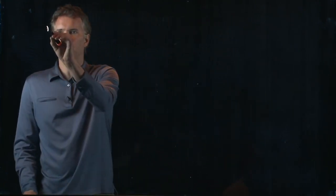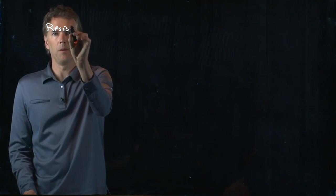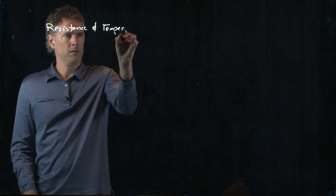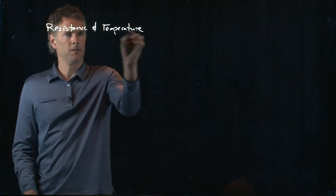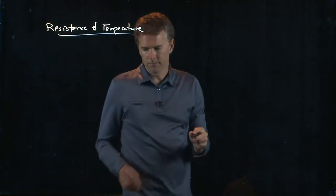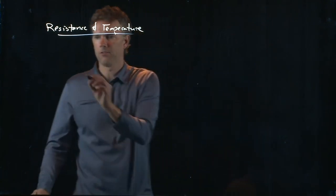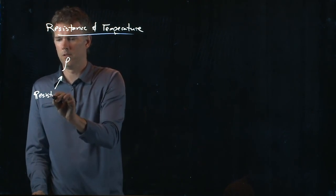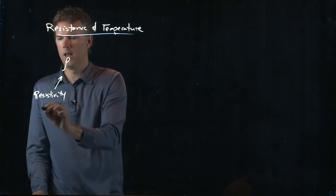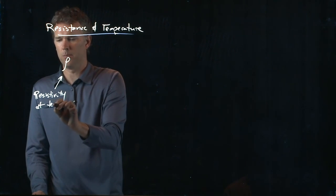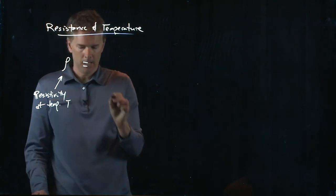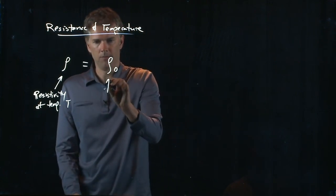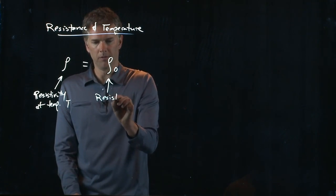All right, resistance also varies with temperature. So resistivity at some temperature rho, this is resistivity rho at some particular temperature T, is in fact equal to rho naught, some calibrated resistivity.